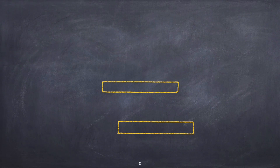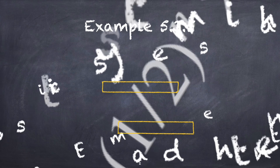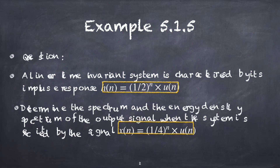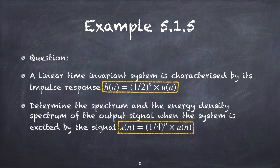First, let's start with example 5.1.5. Here, a linear time-invariant system is characterized by impulse response h(n) as given, and we are asked to find the spectrum and the energy density spectrum of the output signal when the system is excited by x(n) as given.